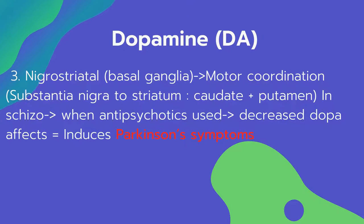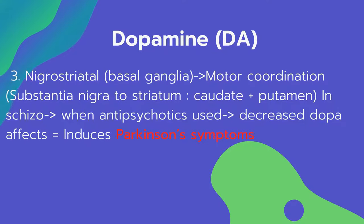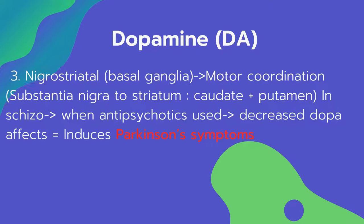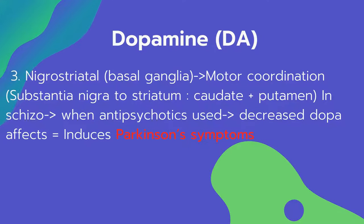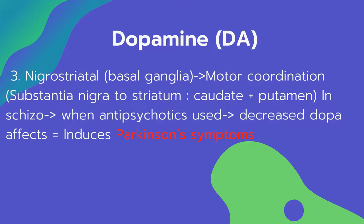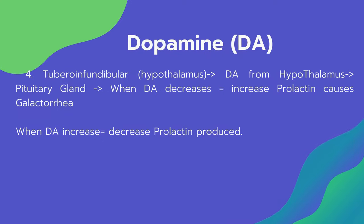The third dopamine pathway is the nigrostriatal pathway, responsible for motor coordination. Dopamine travels from the substantia nigra to the striatum. In schizophrenia, antipsychotics decrease dopamine in this pathway, which can induce parkinsonian symptoms.